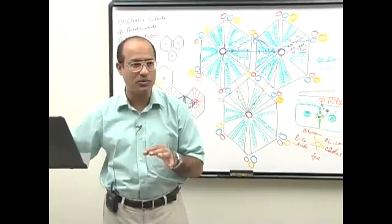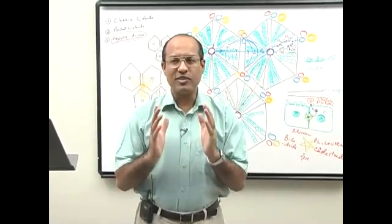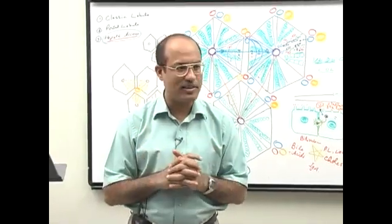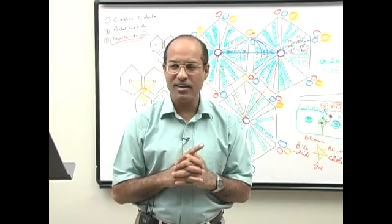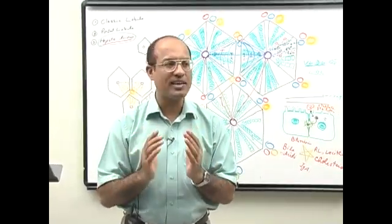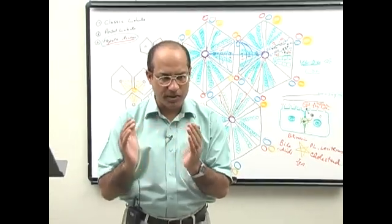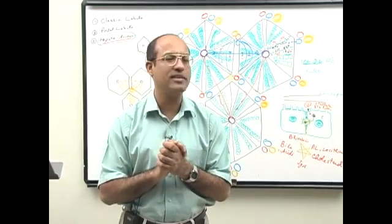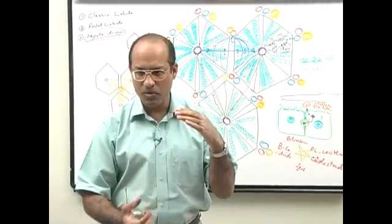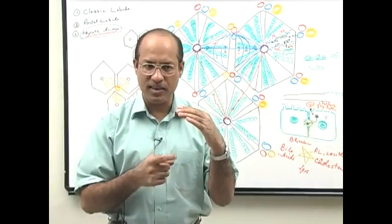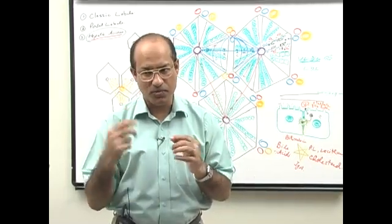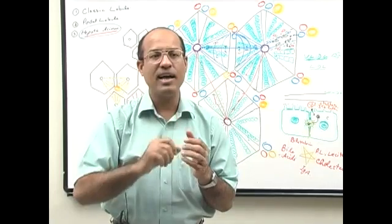Quick review questions: the classic lobule has the central vein in its center; the portal lobule has the portal triad or bile duct system in its center. When we talk about the hepatic acinus, zonation of hepatocytes is done according to the level of oxygen supplied. Regarding input and output systems of the liver: there are two input systems — the portal vein and the hepatic artery — and two output systems — the hepatic vein and the lymphatic system.